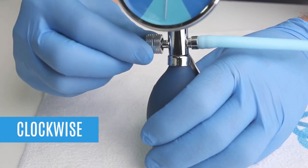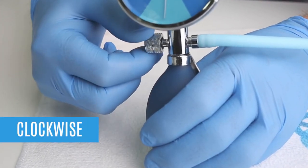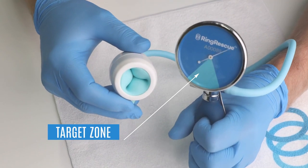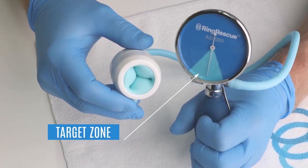Step 5: Time to inflate the device. Start to inflate the device by turning the valve closed in a clockwise motion. Next, inflate the device until the target zone is achieved.